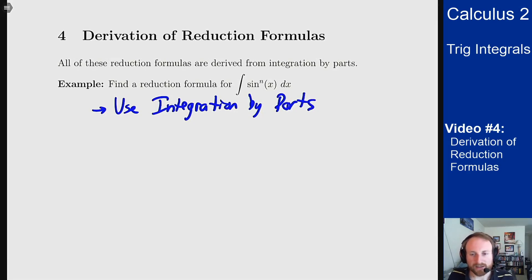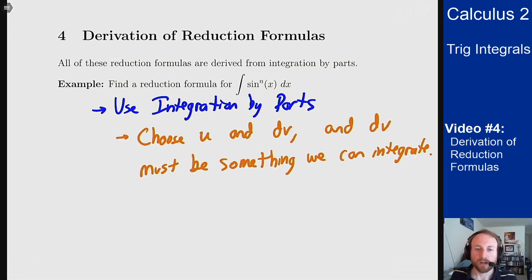So what do we need to do integration by parts? We have to pick a u and a dv, and the important constraint we have to make sure we meet is that the dv is something we know how to integrate. So I want to visualize sine to the n of x dx as a product udv where I know how to integrate the dv term.